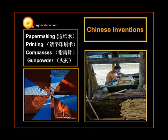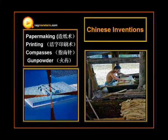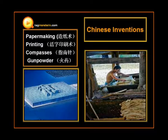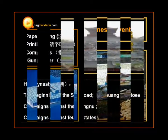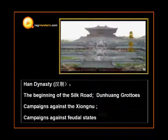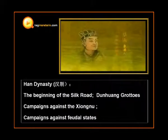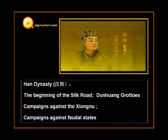Although paper existed in China before Cai Lun, he was responsible for the first significant improvement of paper making by adding essential new materials into the composition.